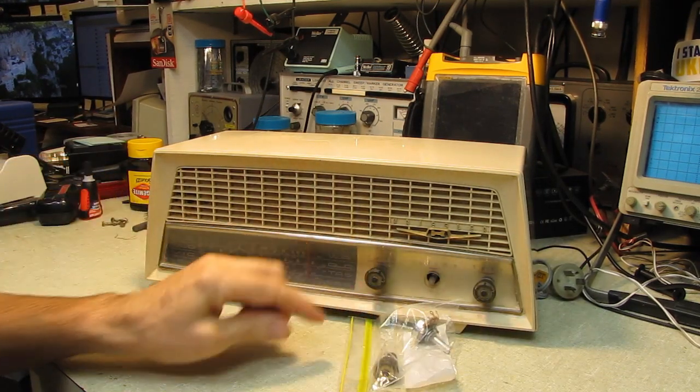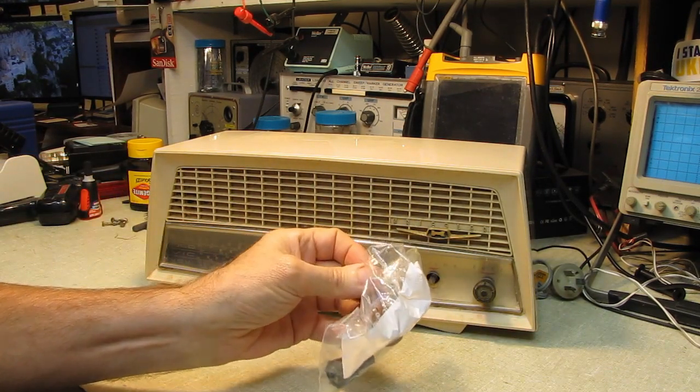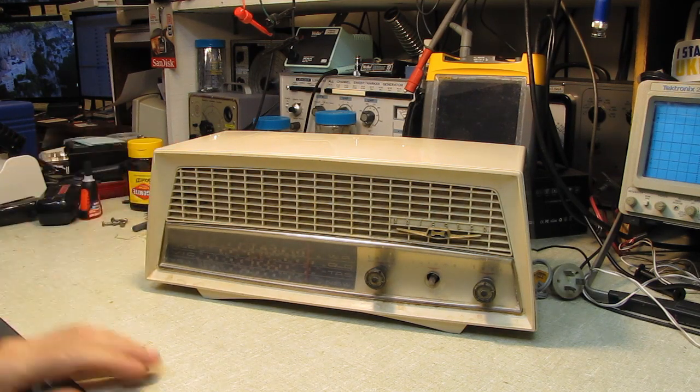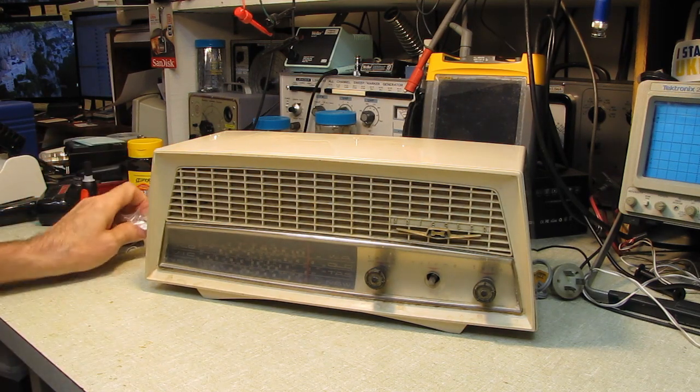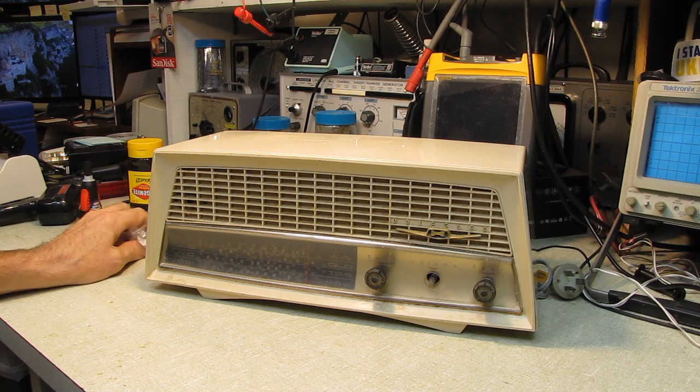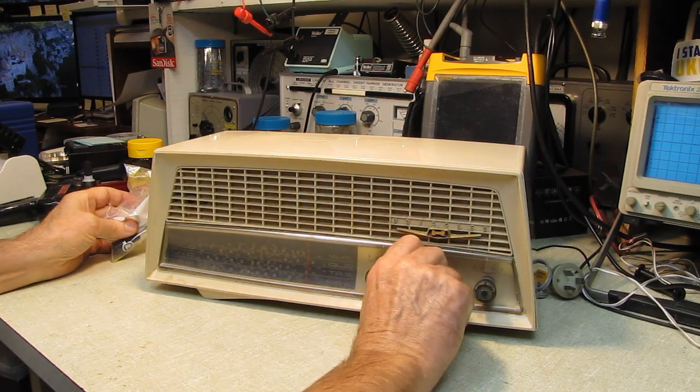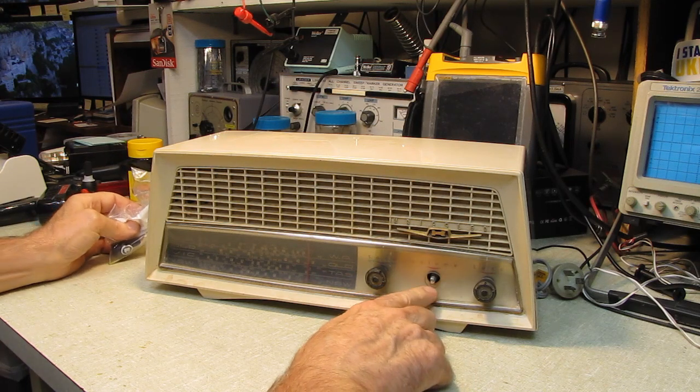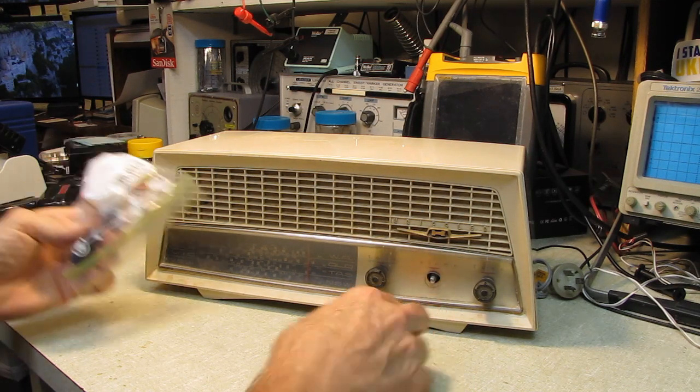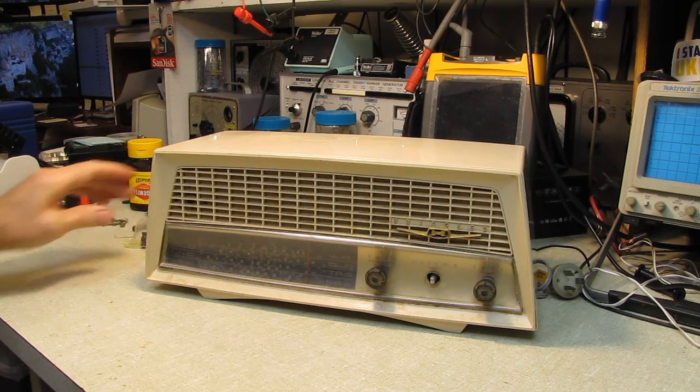I do have all the knobs. He also sent along a volume control or a potentiometer. So I'm assuming it must be for the volume. That would be my guess. And that looks like it's been broken off at some point. The knob is here. I have all those parts.